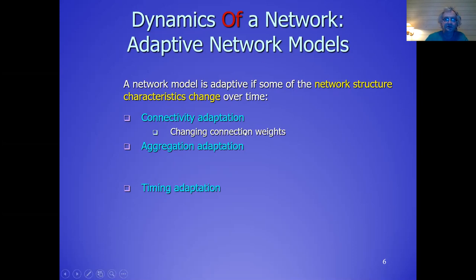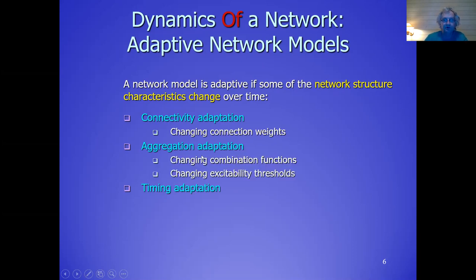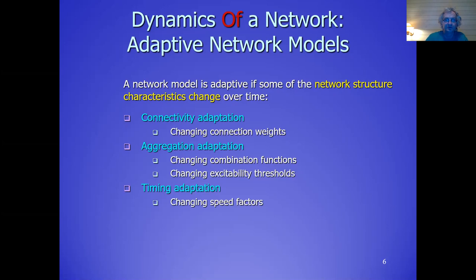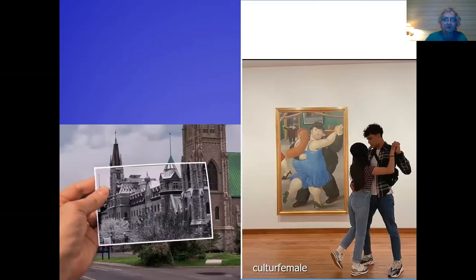Changing connection weights is a rather familiar subject to many machine learning approaches that use neural networks. But you can also have aggregation adaptation when you change combination functions — for example, changing excitability thresholds of activation of your nodes in the network. And you can also have change of speed factors, so that the timing is also adaptive. I will tell a bit more about realistic principles for those types of adaptations in a moment.